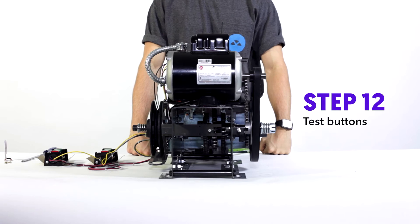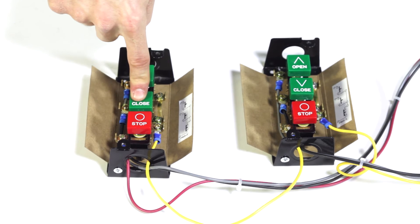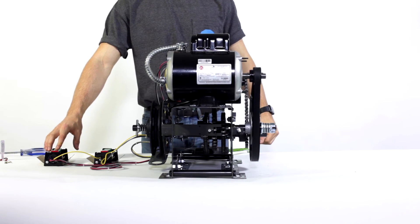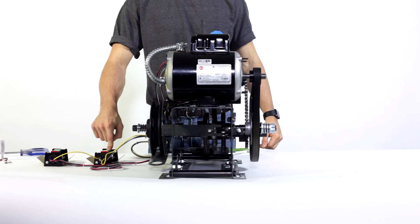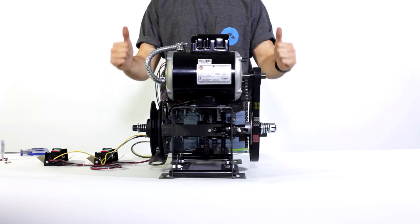Step twelve, test your buttons in any kind of sequence that you want. Close, stop, open, stop, whatever. If it works, then we have a double thumbs up.